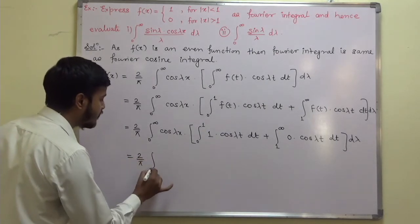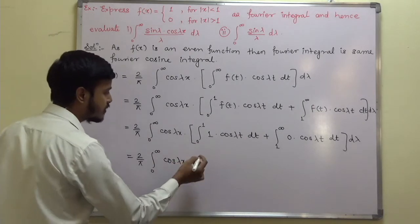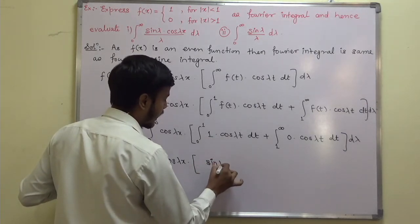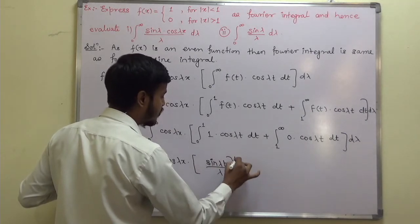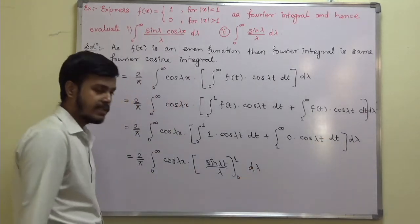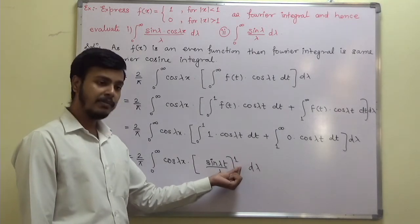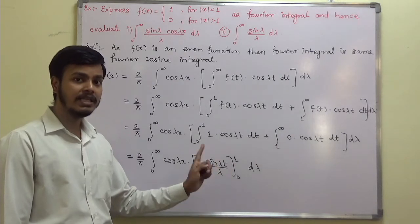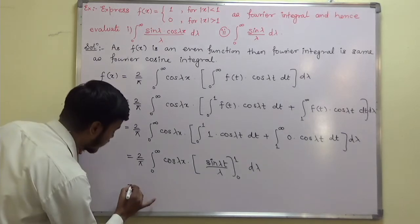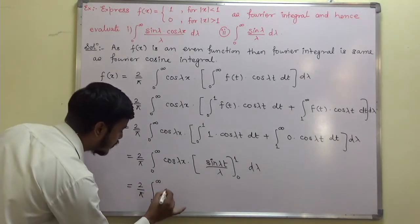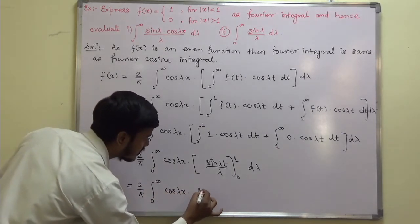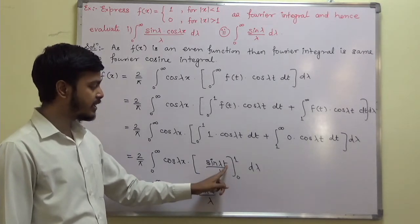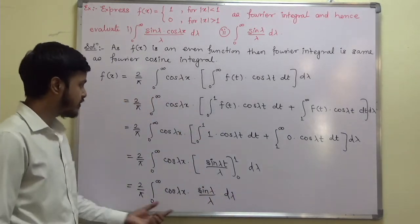This second part is 0, so we only need the first integral. This is 2 by π, integration 0 to infinity, cos(λx) into [sin(λt)/λ, limit 0 to 1] dλ. Substituting limits: upper limit t=1 gives sin(λ)/λ, and lower limit t=0 gives sin(0)=0. So this is 2 by π, integration 0 to infinity, cos(λx) times sin(λ)/λ dλ, and this is my f(x).